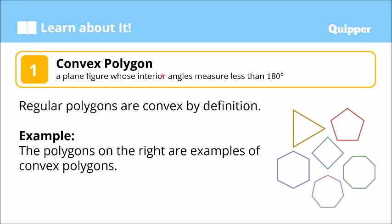What is a convex polygon? A plane figure whose interior angles measure less than 180 degrees — we call that a convex polygon. Regular polygons are convex by definition. As we discussed in our previous lesson, regular polygons are polygons where all the sides are equal and all the interior angles are also equal. So, a convex polygon has interior angles that measure less than 180 degrees.